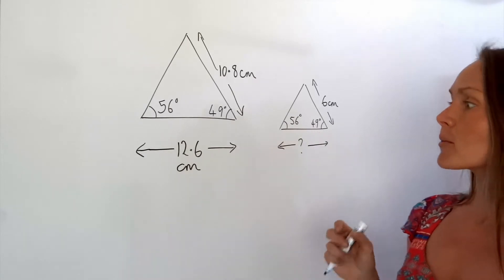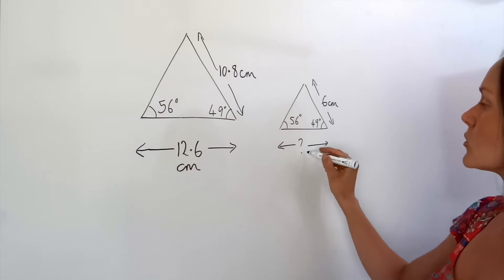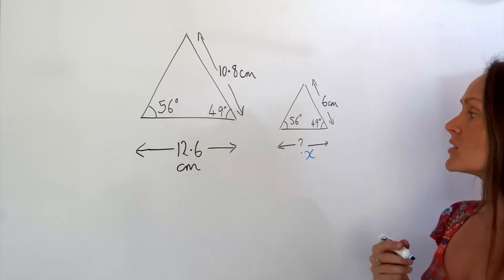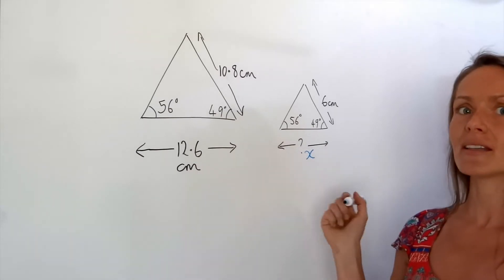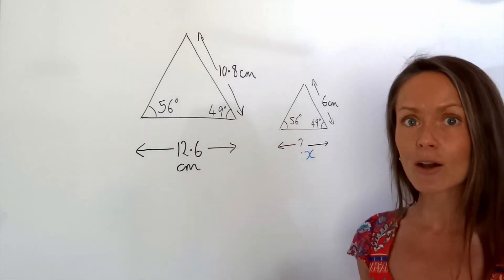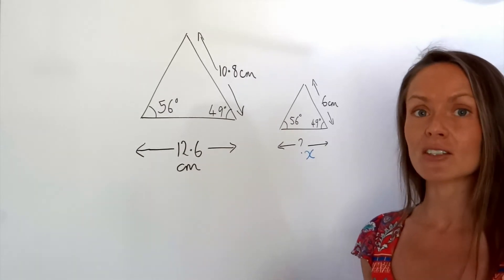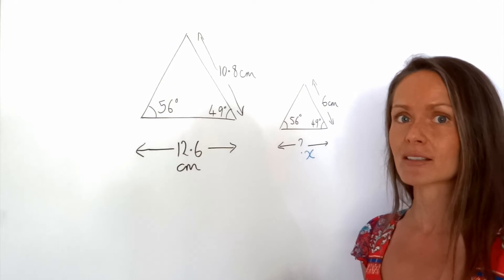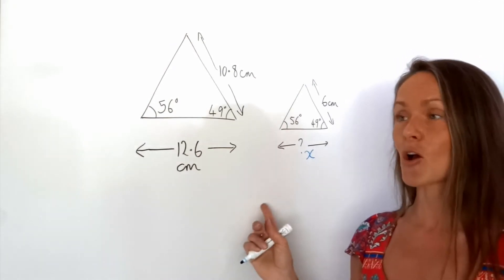I'm going to start by labelling my missing length with a letter, so I'm going to call this unknown X. When I divide two sides in similar shapes, I find something called a scale factor. It doesn't matter which pair of sides you're dividing — you should always get the same scale factor if they're similar shapes, like in this example here.